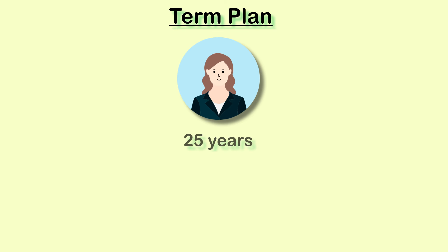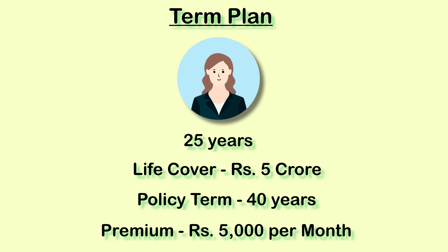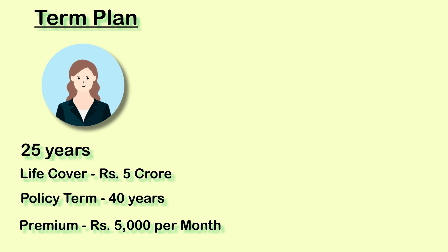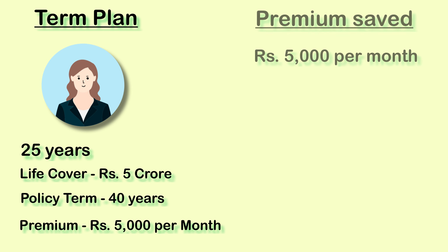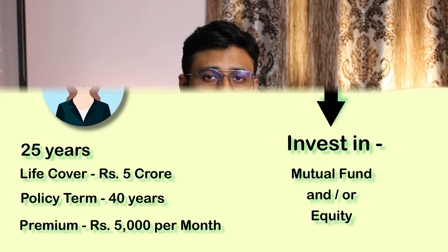Say person A who is 25 years old wants a life cover of Rs 5 crore for a term of 40 years, and he pays a premium of around Rs 5,000 per month. If the above was an endowment plan, the monthly premium would double to Rs 10,000. You might argue that at least you're getting some amount at maturity — but think of it this way: go for a term plan, pay Rs 5,000 per month, and invest the additional Rs 5,000 saved every month in a mutual fund or equity. The amount you would get after 40 years would be much higher than what you would get from an endowment plan.